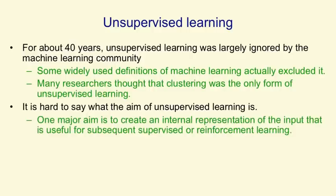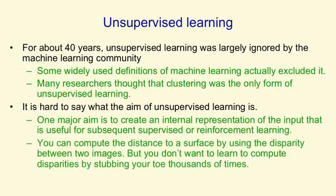The reason we might want to do unsupervised learning in a separate stage is that we don't want to use, for example, the payoffs from reinforcement learning to set the parameters of our visual system. You can compute the distance to a surface using the disparity between the images in your two eyes, but you don't want to learn that computation by repeatedly stubbing your toe and adjusting the parameters in your visual system each time. That would involve stubbing your toe a very large number of times, and there are much better ways to learn to fuse two images based purely on the information in the inputs.